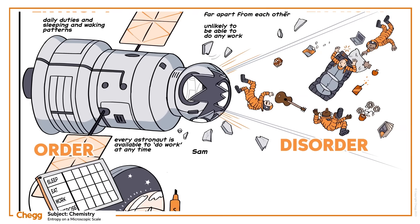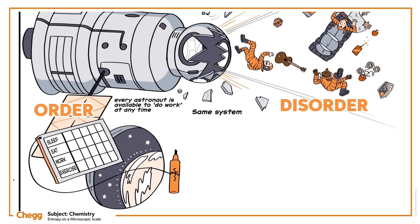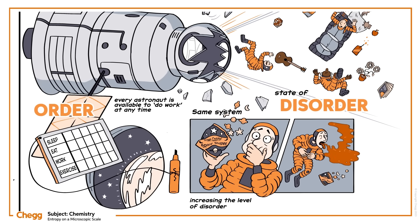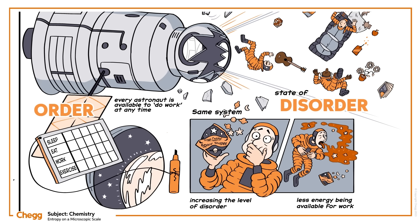But even if we keep the same system, that is assuming the spaceship stays the same, increasing the level of disorder in the system through, for example, sickness or poor scheduling, also results in less energy being available for work. Left to their own devices or without confinement, most order, meaning high heat zones, will move to disorder. This is a way of thinking about the second law of thermodynamics. Energy always spreads out.